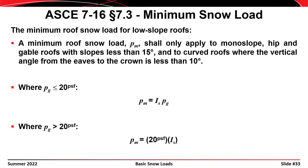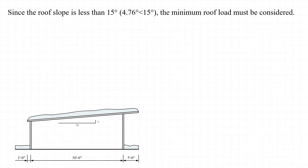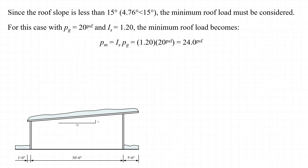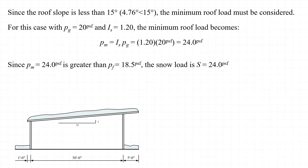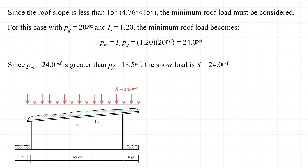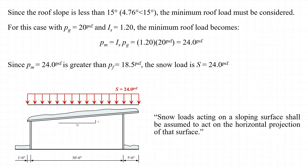Now we'll consider the minimum snow load. Our structure with a 1 on 12 slope has a roof angle of 4.76 degrees. Since this is less than 15 degrees, we must consider the minimum snow load P sub m. With a ground snow load of 20 pounds per square foot, the minimum snow load equals I sub s times P sub g, giving 24 pounds per square foot. Since this exceeds the flat roof and sloped roof snow loads, it governs. The snow load is applied to the horizontal projection of the roof.